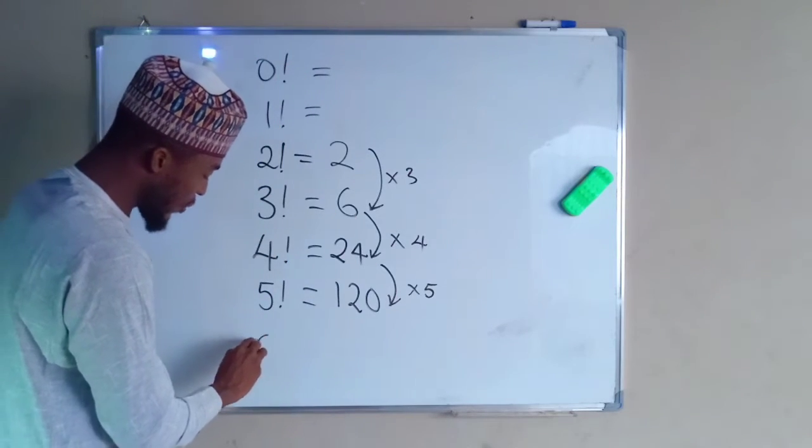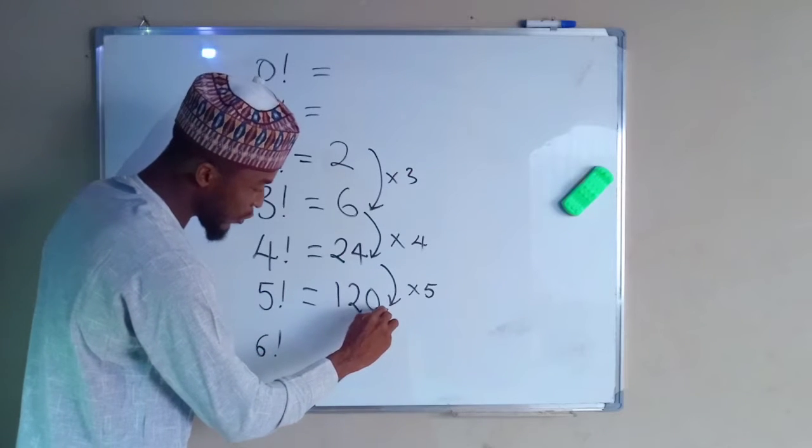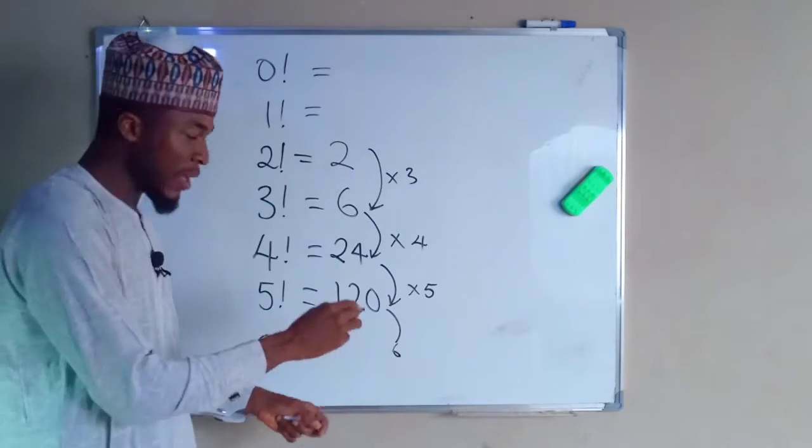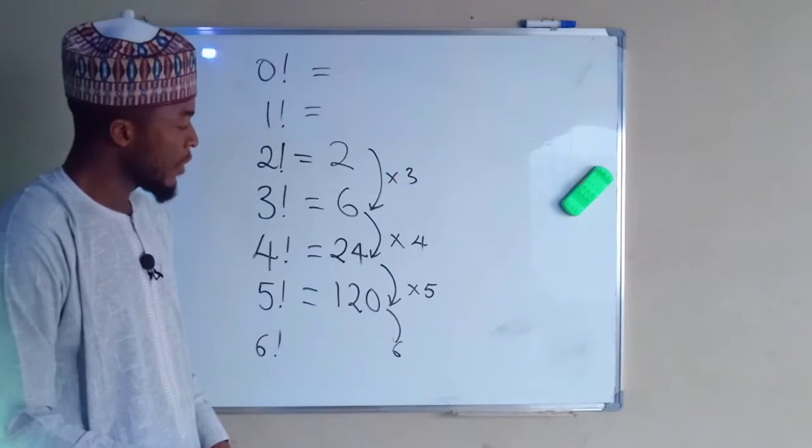For example, if you want to find out 6 factorial, you are going to times 120 by 6 this time around. And this is how it will keep on going.